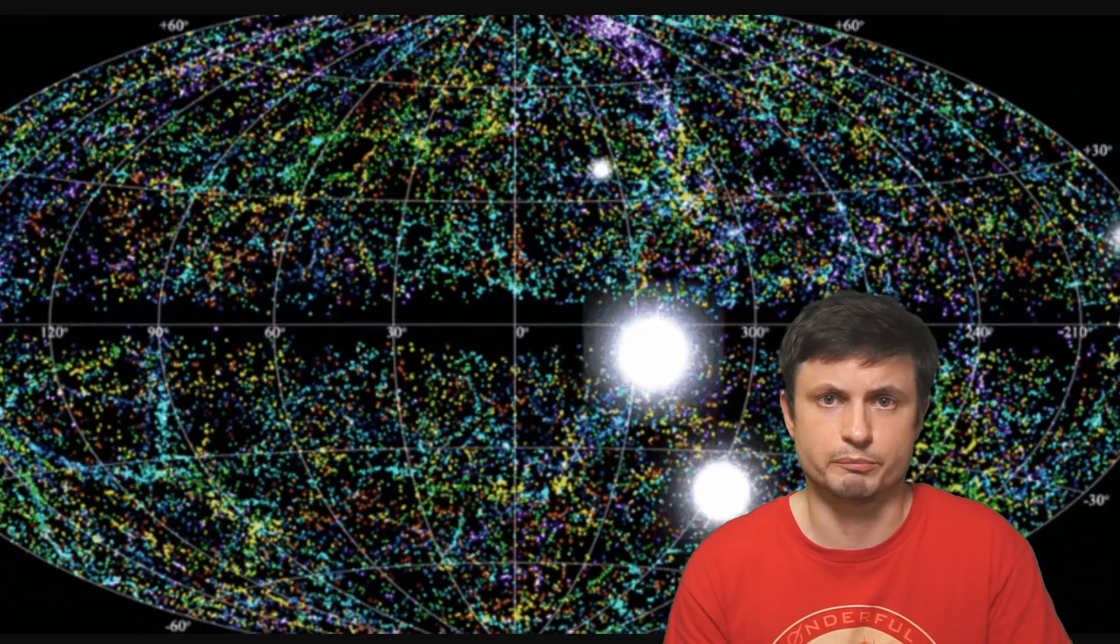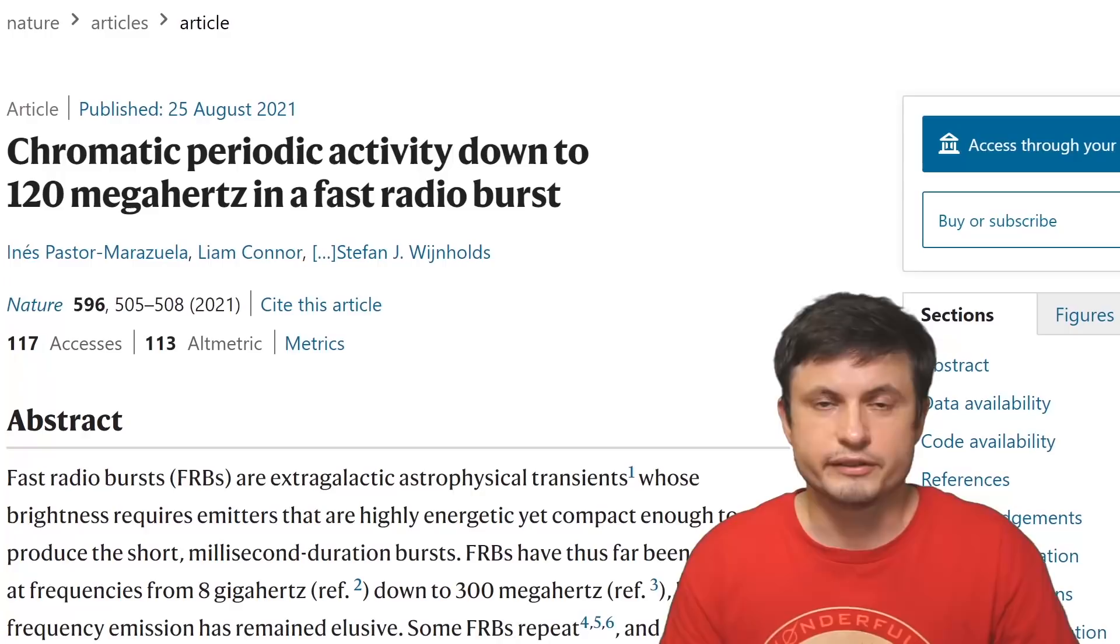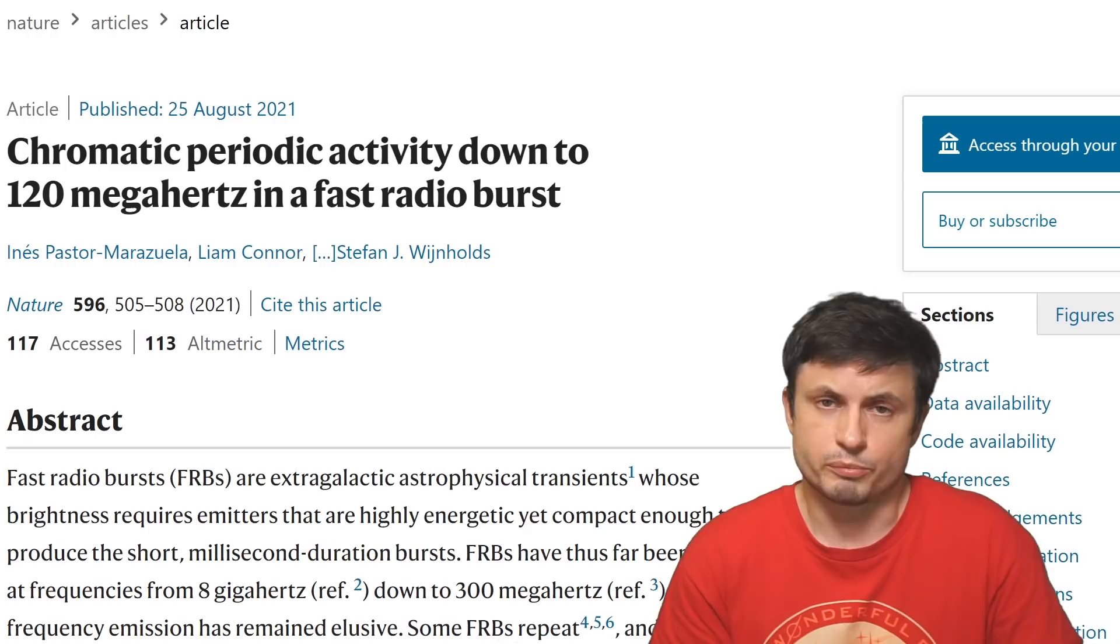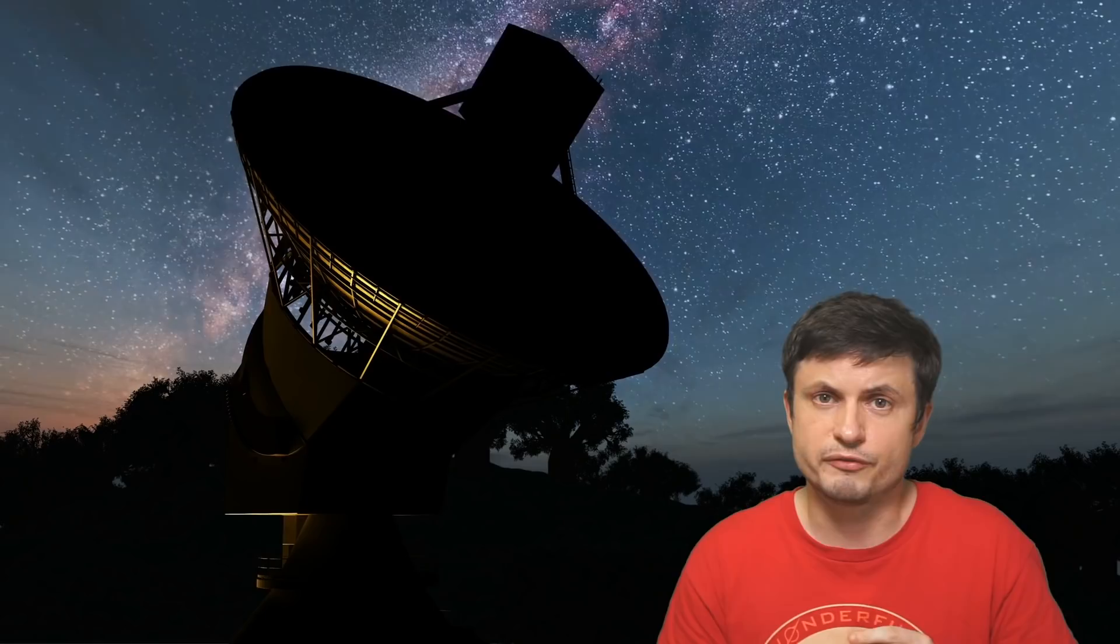But intriguingly enough, one of the most famous repeated FRBs, the FRB known as 121102, not so long ago has also been confirmed to be very likely a periodic repeater. It seems to have its own pattern. It seems to create radio bursts for approximately 90 days with random bursts, and then stay quiet for about 67 days, with the total cycle being about 157 days, or roughly around 10 times as long as the one discussed in this paper. So if we have two of these unusual phenomena, we're probably going to get much closer to trying to figure out what's happening here. And it's probably only a matter of time before someone finally is able to explain what's going on here.